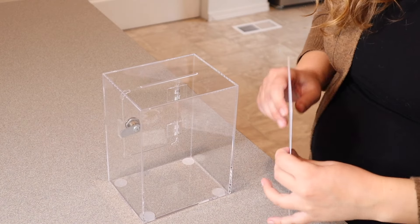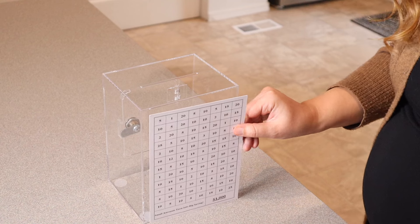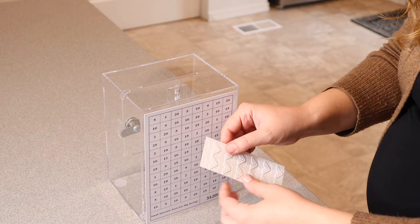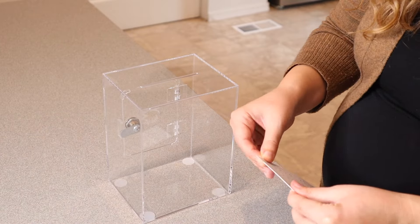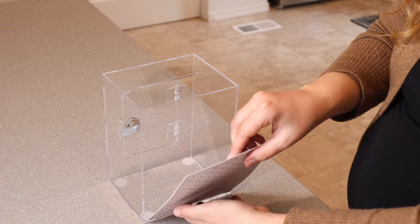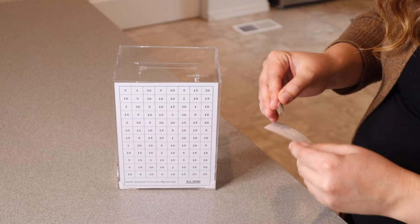We went ahead and selected one of the savings plans that's going to work best for my daughter. So I'm just going to secure the savings plan on the back here with these little corner stickers. I just want to make sure that's lined up nicely.